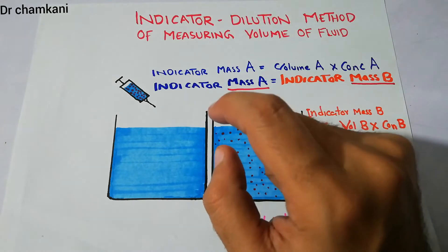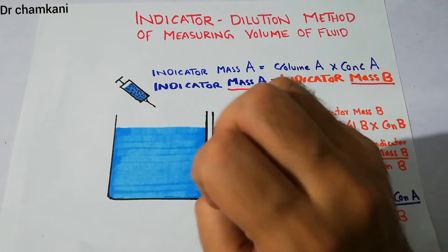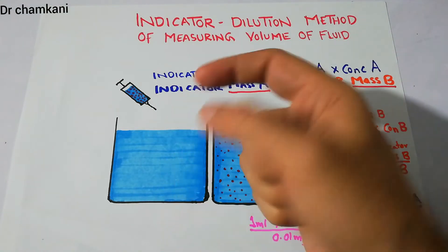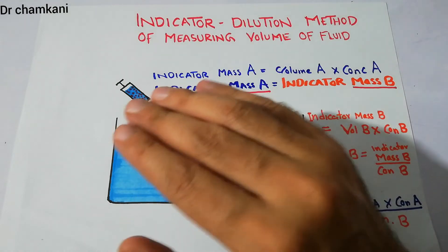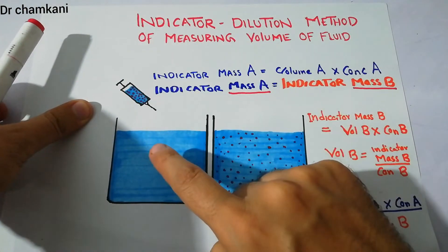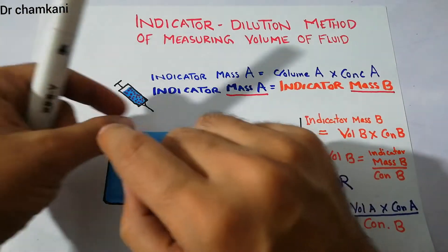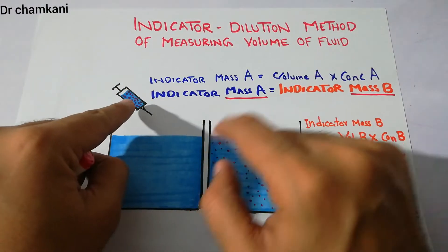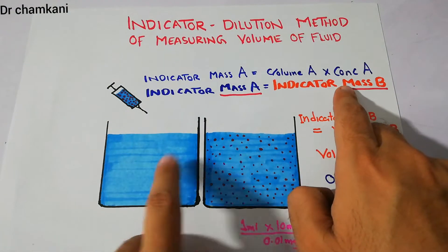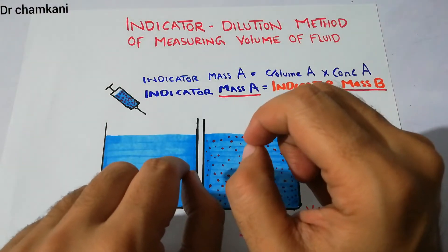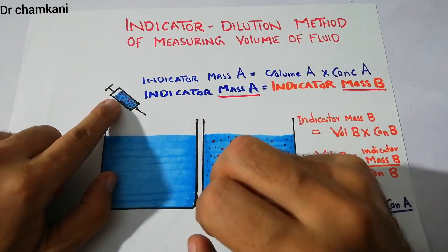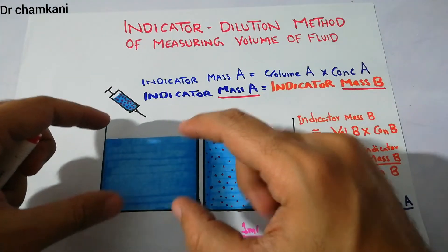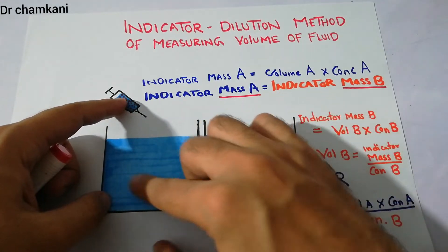There is the law of conservation of mass, which states that the mass of this indicator will remain the same after being put into another fluid, if no fluid is lost. Suppose while injecting this indicator into this fluid, if there is no loss, then the mass of this fluid will be equal to its mass in the original container. We call it mass A when it is not injected and mass B when it is injected into the fluid. The indicator disperses and dissolves into the large fluid.